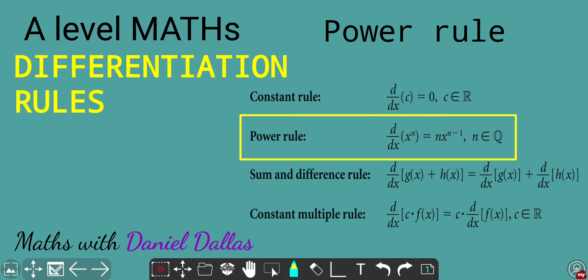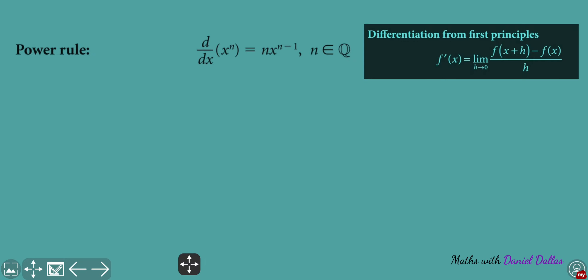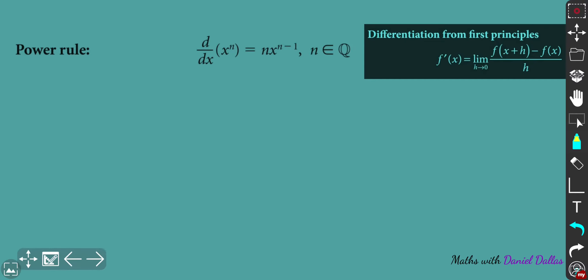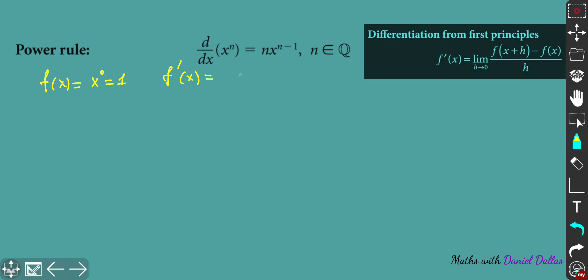Welcome back. We are doing power rule proofs. Before doing it in the general way, I'll show how it works for a specified case. For example, if your function f equals x to the power zero, that's literally just one. So if you take f prime, or dy/dx, you'll get zero, because c in this case equals one and this is a constant.